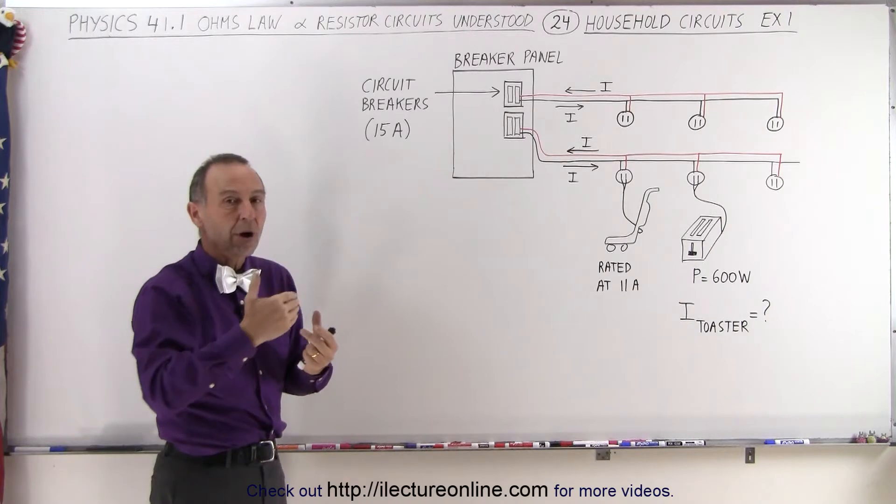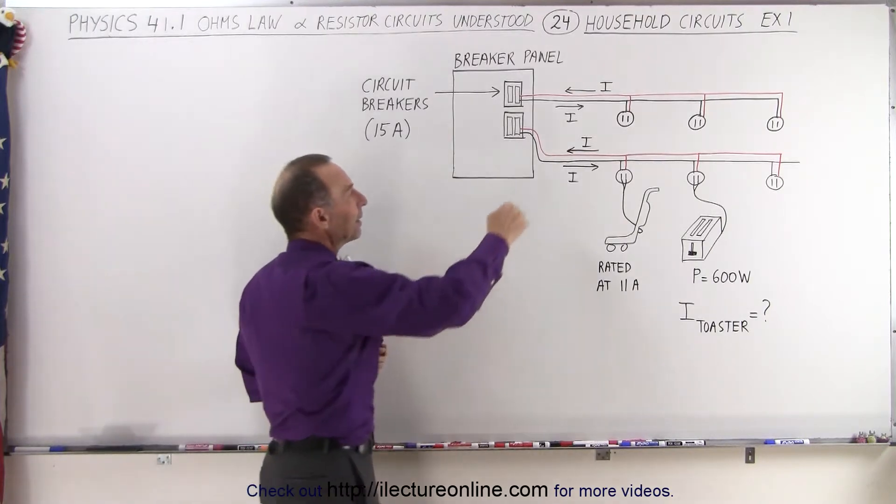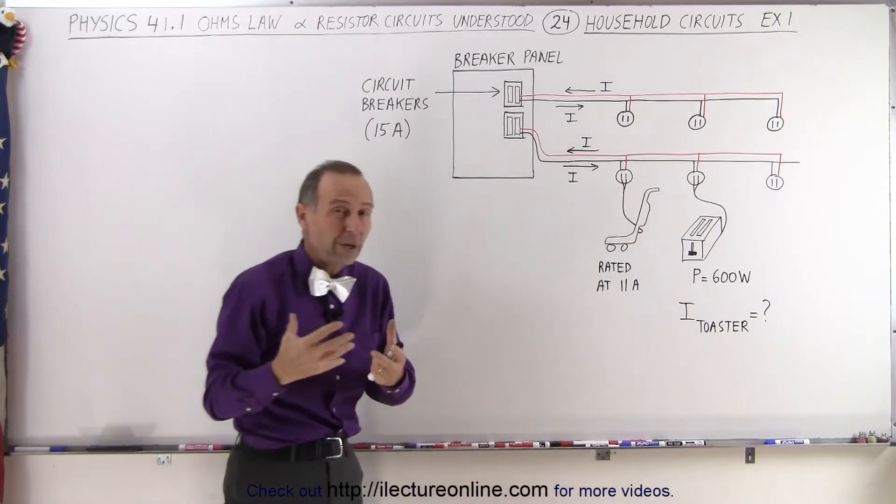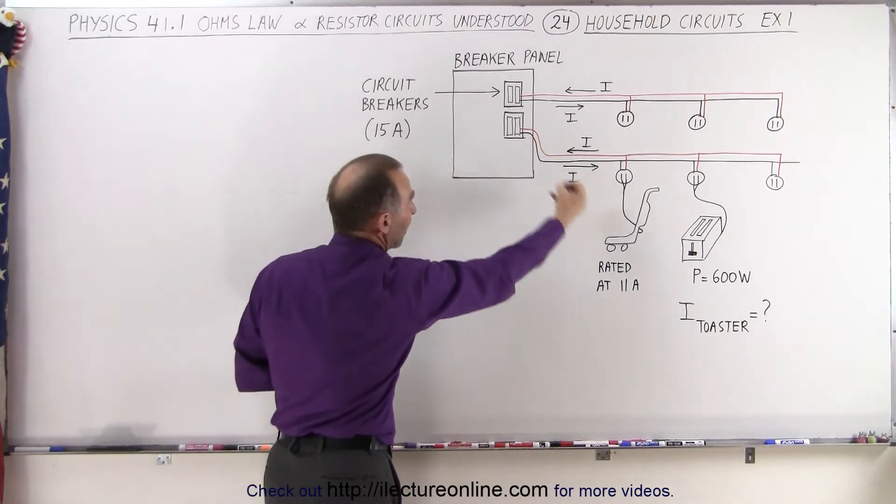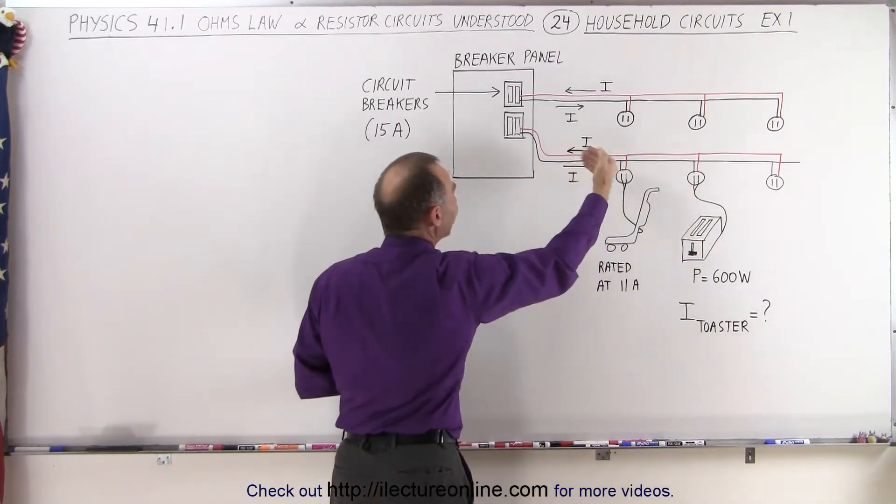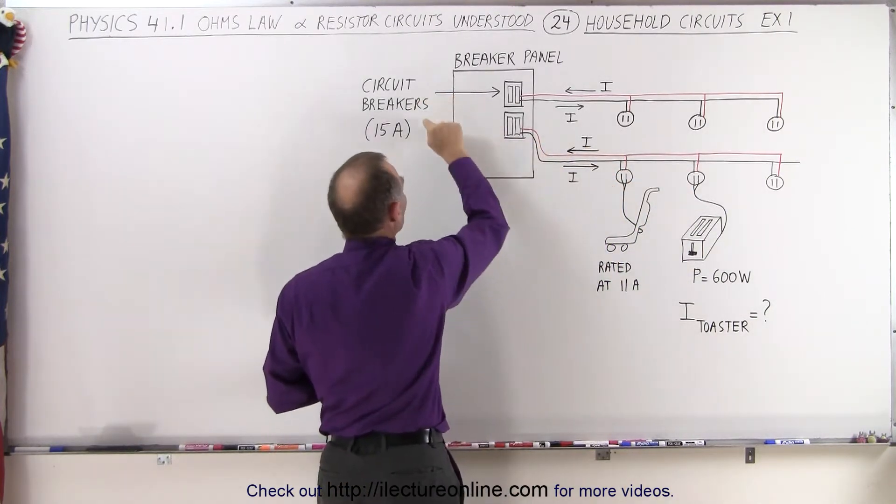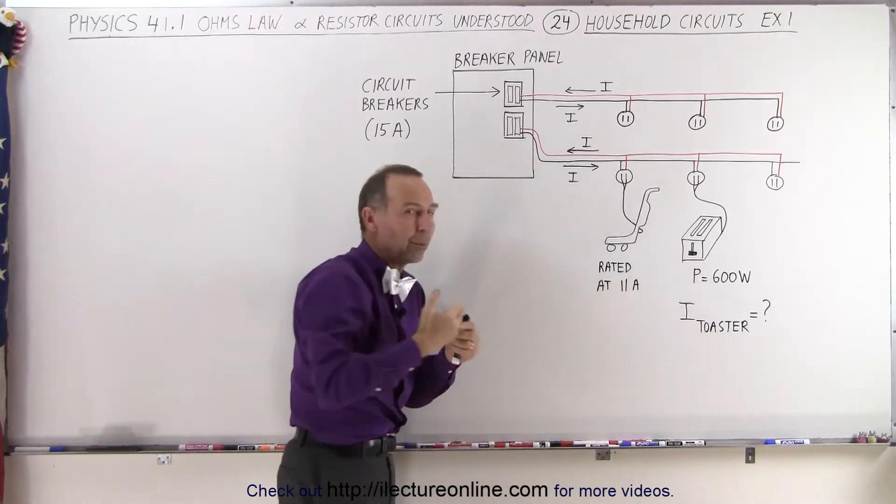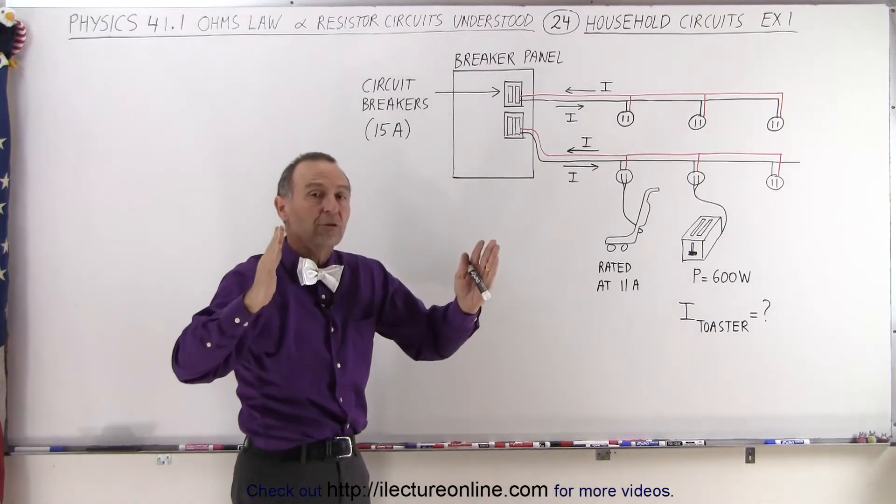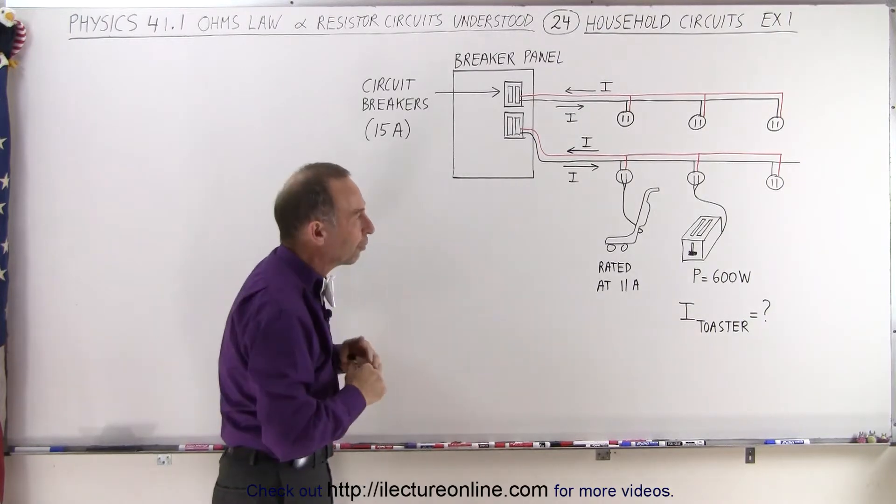If the current draw is too great, the wires could heat up to the point where you could actually start a house fire, so you want to prevent that. If the current demanded by the appliances that you hook up onto your circuit exceeds what is allowed by the circuit breaker, the circuit breaker will trip and current will simply stop flowing. It simply opens up the circuit and no more current is allowed to flow.